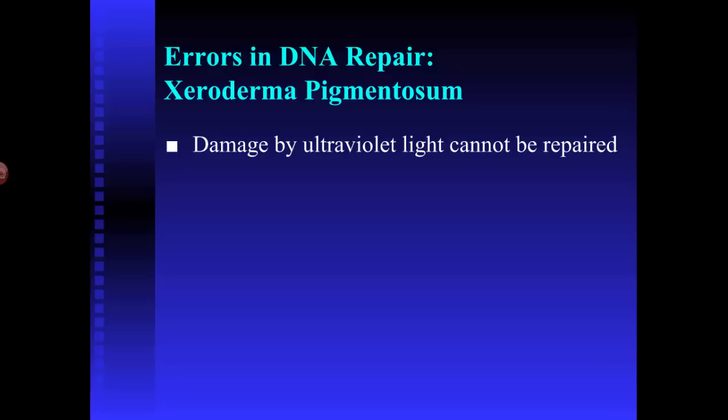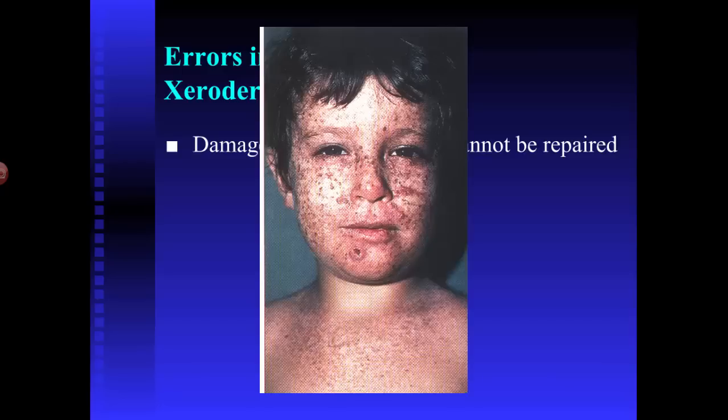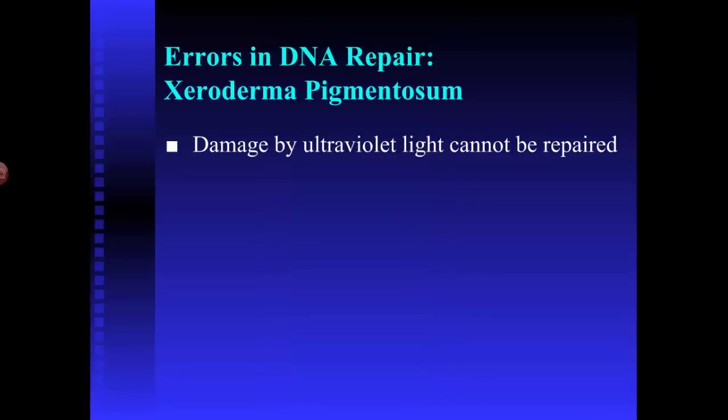If you can't repair it, the damage is cumulative. Every time a person who has xeroderma pigmentosum — XP for short — is exposed to any source of ultraviolet light, whether the sun, some incandescent or fluorescent light bulbs, or even some candlelight depending on the wax composition, the damage builds up over time. They get blisters on their skin, they can get skin cancers very easily. It's a very difficult life.